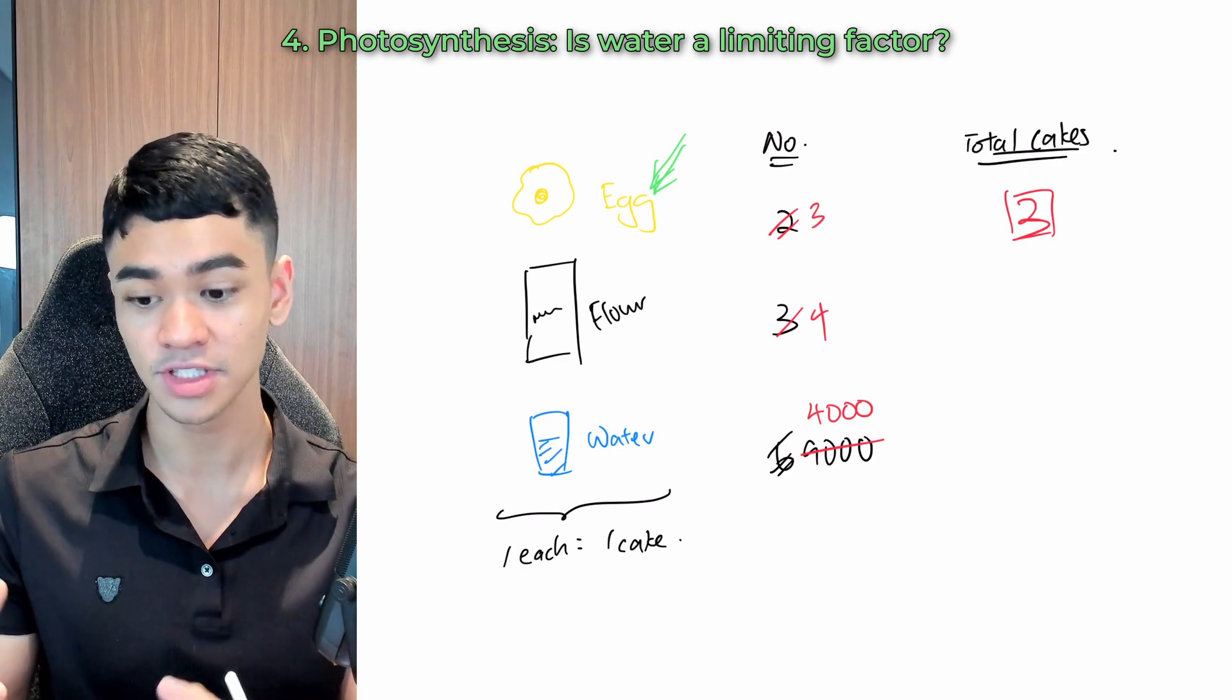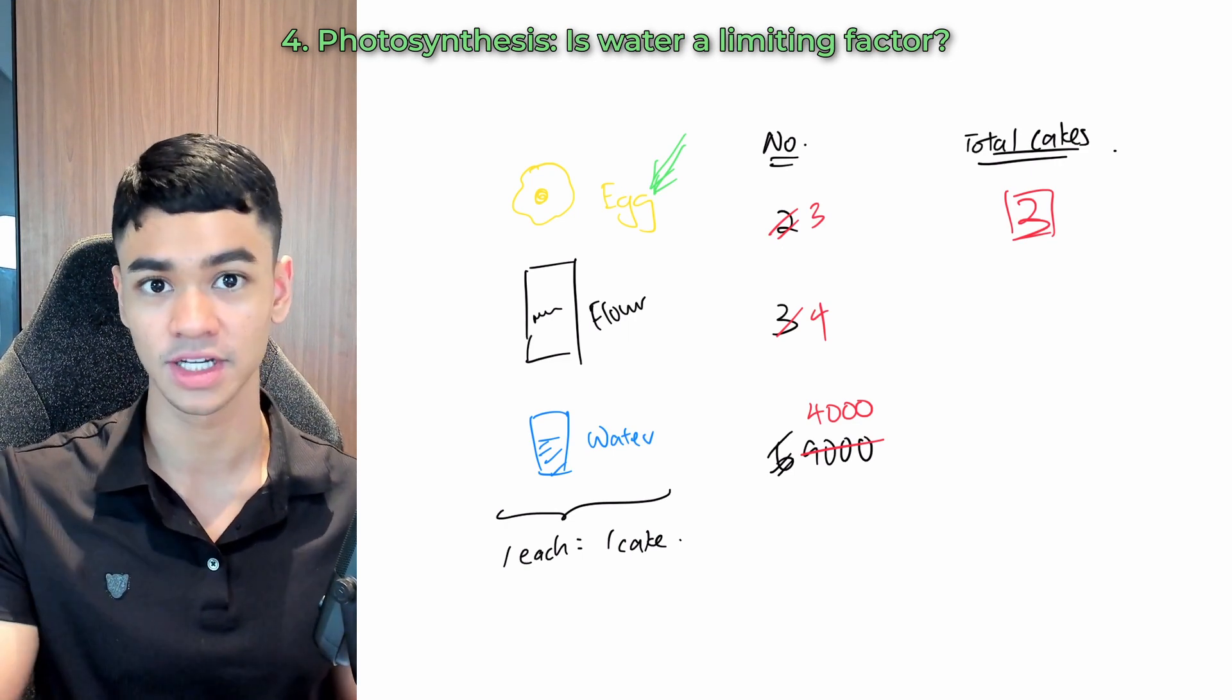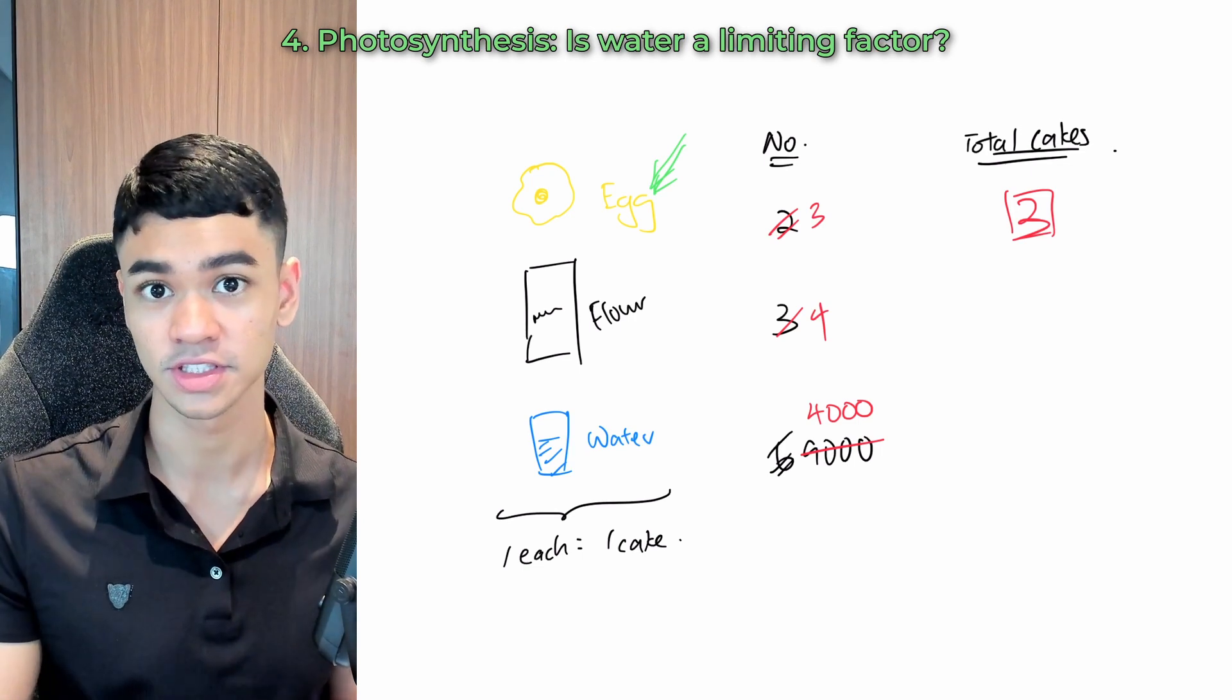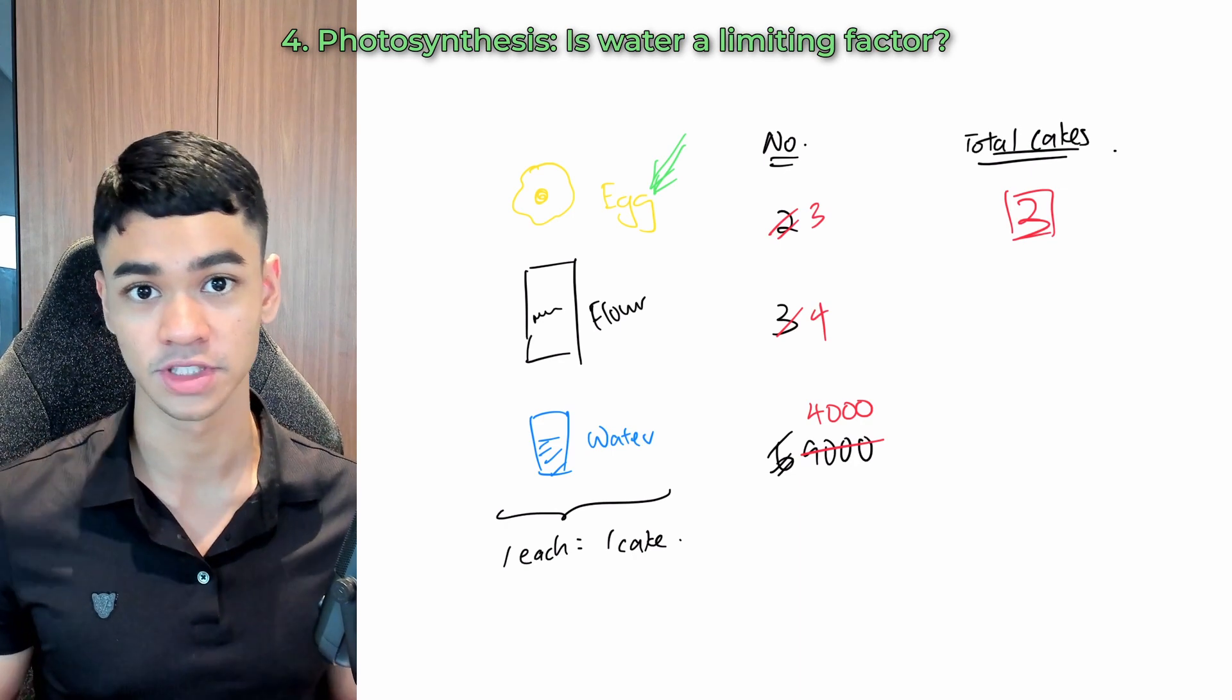So in plant cells, there are literally millions of water molecules. And there's just so much more compared to all the other ingredients needed for photosynthesis. So even on a bad day when the plant is dehydrated, water is still not a problem for photosynthesis.